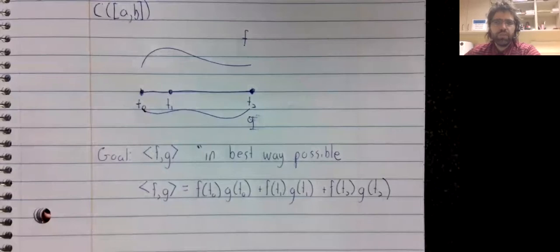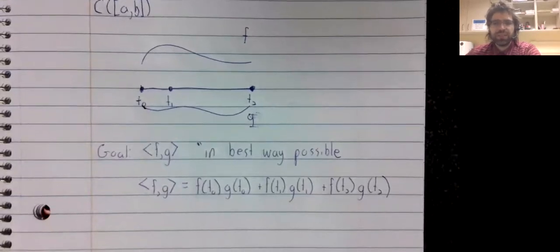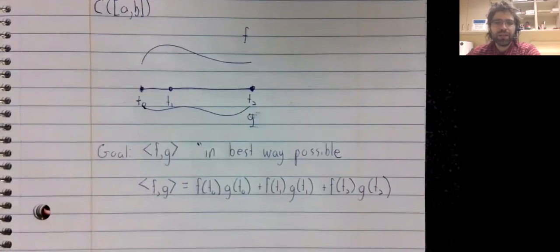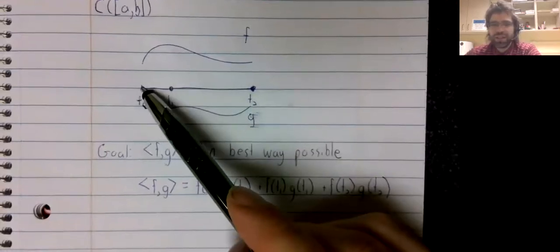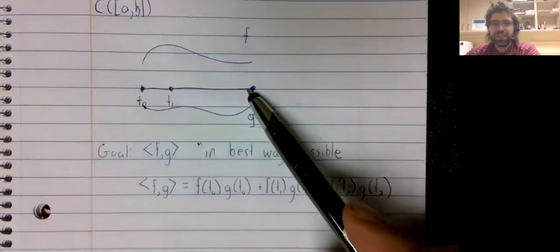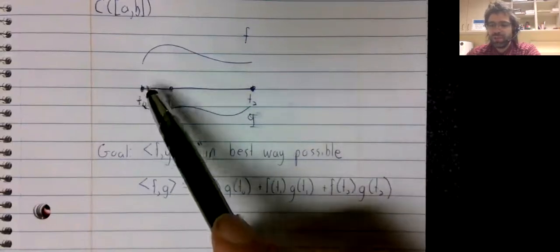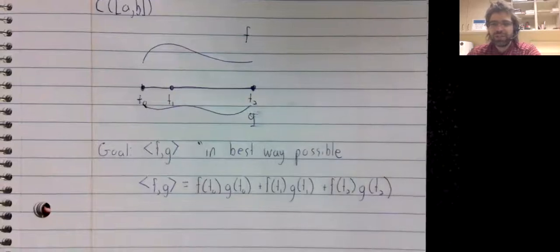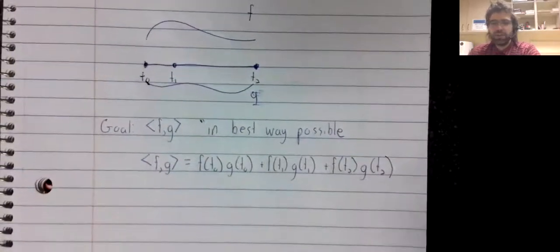And I guess the obvious weakness, at least the one that first springs to my mind, is that you're ignoring most of the function. This function is defined at every point in this interval. You're only looking at it at three points.